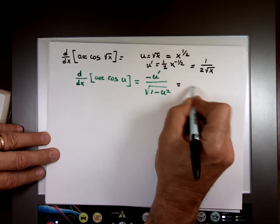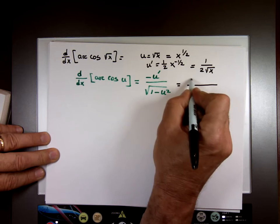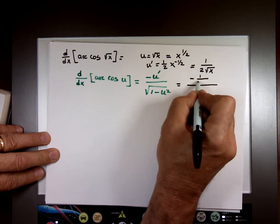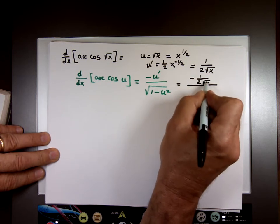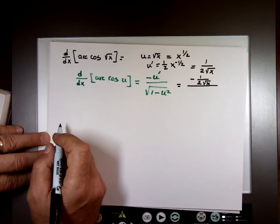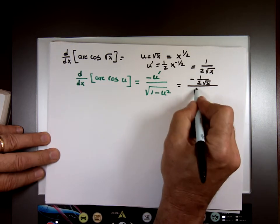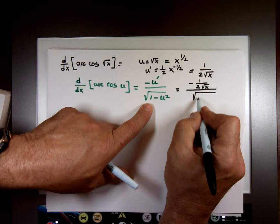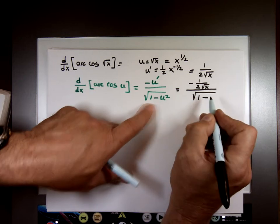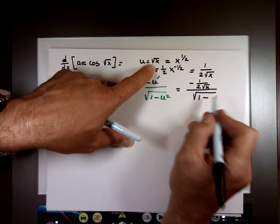So let's plug in the answer, negative 1 over 2 times the square root of x, divided by the square root of 1 minus, now when you square a square root, you lose the square root sign.